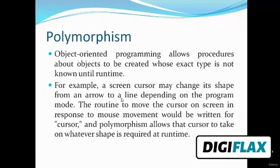Let's first see polymorphism. Object-oriented programming allows procedures about objects to be created whose exact type is not known until runtime. For example, a cursor may change its shape from an arrow to a line depending on the program mode. The routine to move the cursor on screen in response to mouse movement would be written for a cursor, and polymorphism allows that cursor to take on whatever shape is required at runtime.